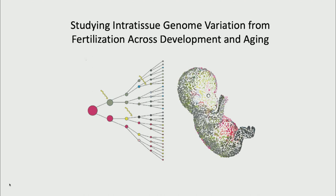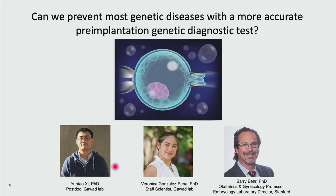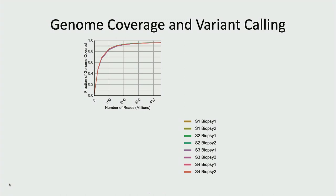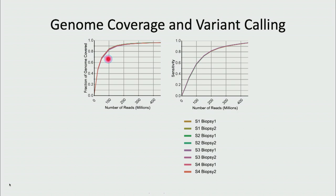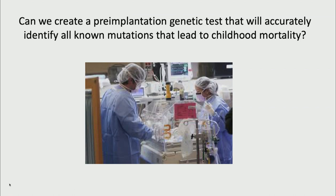The question is how we can use this to study intratissue genetic variation. The first area we worked on when I returned to Stanford was developing a better pre-implantation genetic test. People take a small number of cells, amplify the DNA, and do genetic screening for serious genetic diseases. With four or five cells, we can cover most of the genome and detect about 95 percent of all variants with high precision. We've asked whether we can create a pre-implantation genetic test that accurately identifies all known mutations resulting in early childhood mortality. We now have hundreds of kids being born every month using a test based on our amplification, which is rapidly ramping up.